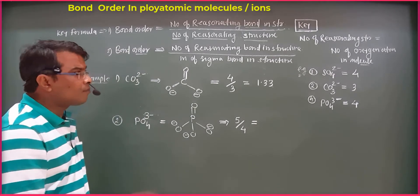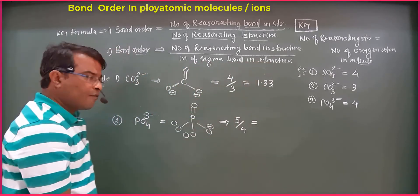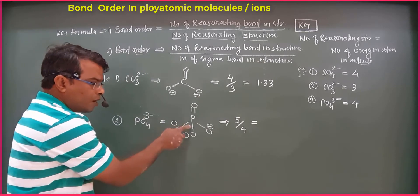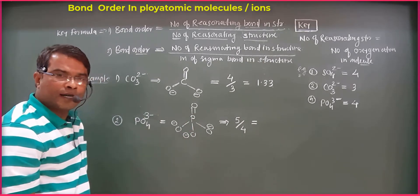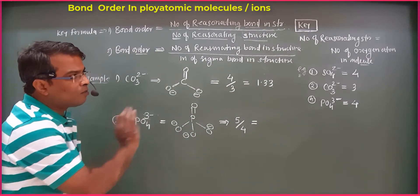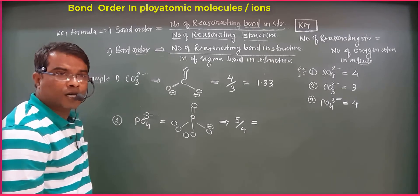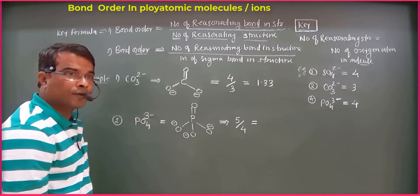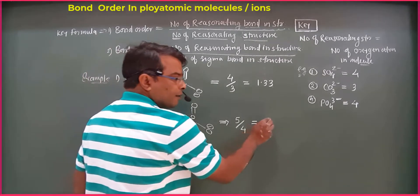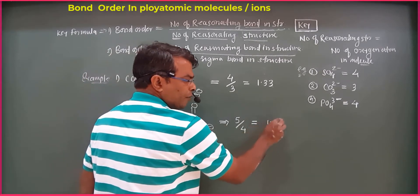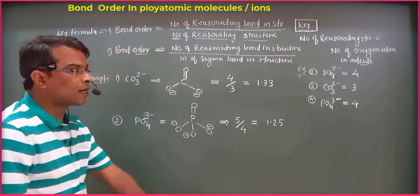What is the number of sigma bonds? 1, 2, 3, 4 — so 4 sigma bonds. Using the formula: the bond order is 4 divided by 5, but wait — the resonating bonds are 5 and resonating structures are 4. The answer is 5/4, which equals 1.25. This bond order is clear.